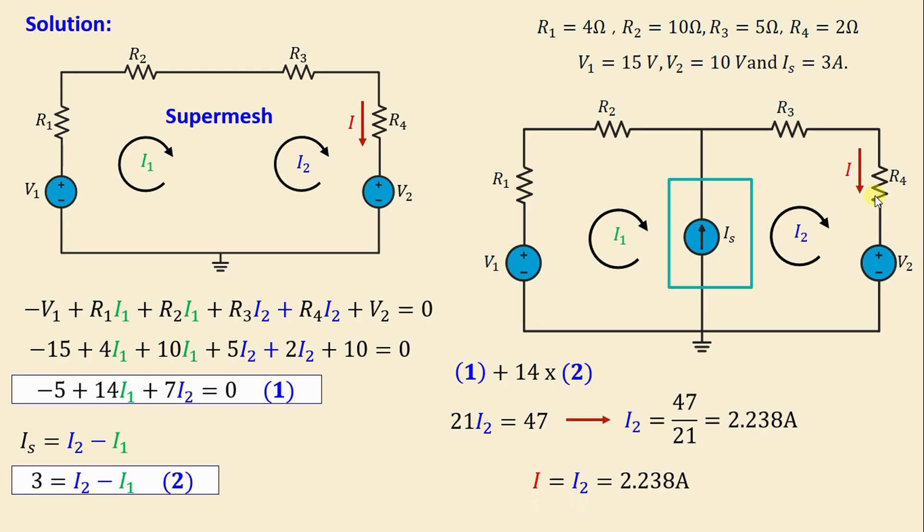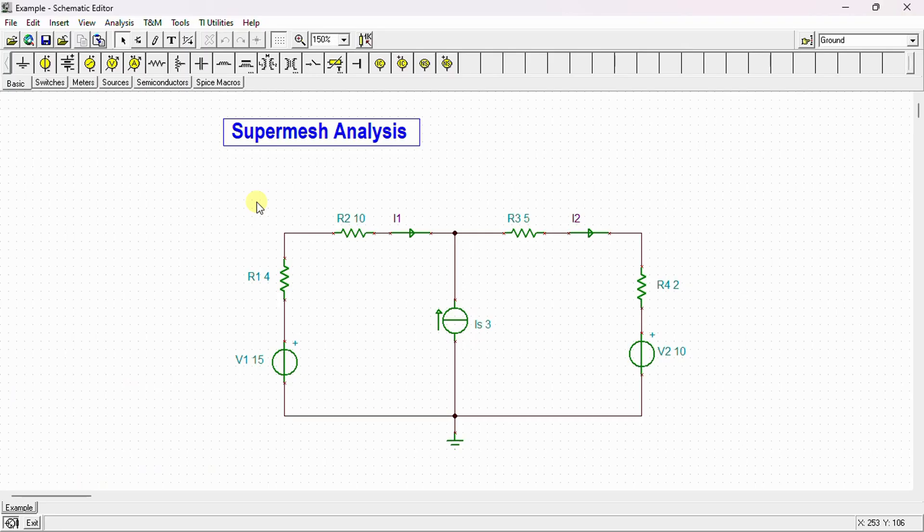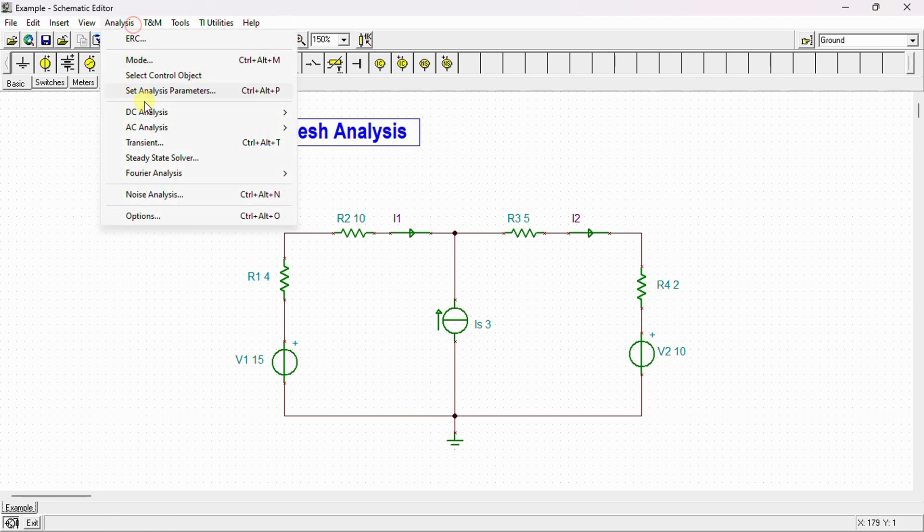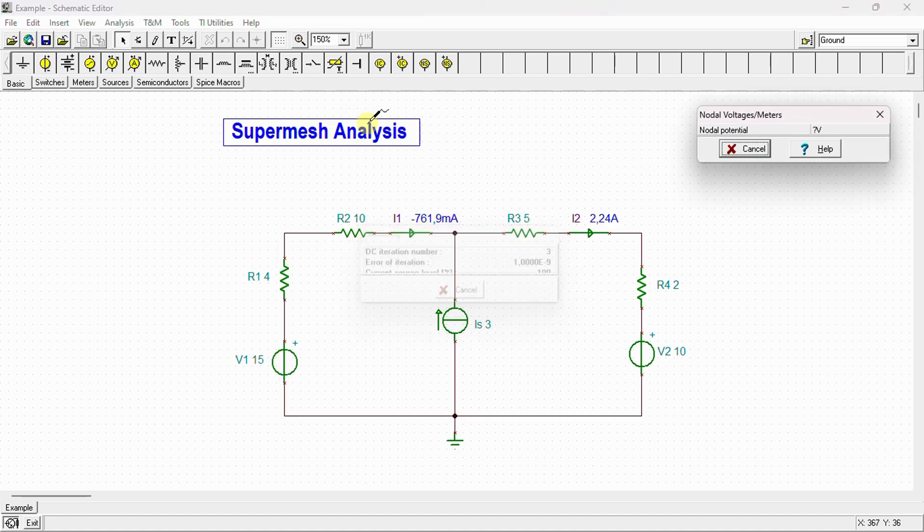After completing the calculation we conduct a simulation using SPICE to verify our results. Now let's proceed to the SPICE environment. Here is the circuit done by SPICE. We can see that V1 and V2 equal 15 and 10 volts, and we have our current source Is equal to 3 amps, along with R1, R2, and R4. Let's go to analysis, calculation of nodal voltages. We can see here that the current I2 equals the current I equals 2.24 amps. This value is exactly the same value we obtained by calculation.